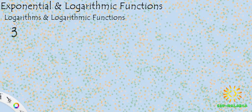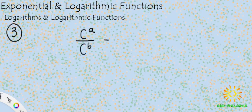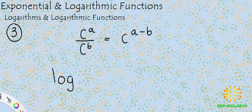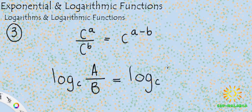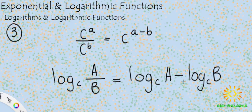The third law of logarithms corresponds to the quotient or division law of exponents. The division law states that c to the power of a divided by c to the power of b equals c to the power of a minus b. The corresponding log law is: log base c of (a divided by b) equals log base c of a minus log base c of b. That is the third law of logarithms.